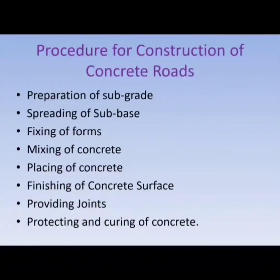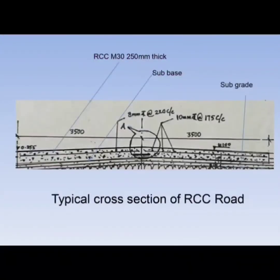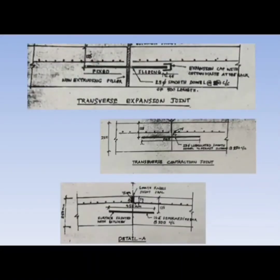The procedure for construction of concrete roads includes: preparation of sub-grade and sub-base, fixing of forms, mixing of concrete, placing of concrete, finishing of concrete surface, providing joints, and protecting and curing of concrete. The sub-grade is to be rolled and compacted, and the sub-base is also to be rolled after laying. Each panel of concrete should not exceed 50 square meters.